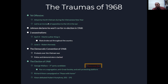Johnson declared that by escalating interference in Vietnam, his popularity was largely declining. He said he wouldn't run for re-election in 1968. Also in 1968, there were two assassinations: on April 4th, Martin Luther King was assassinated, and riots broke out throughout the country.